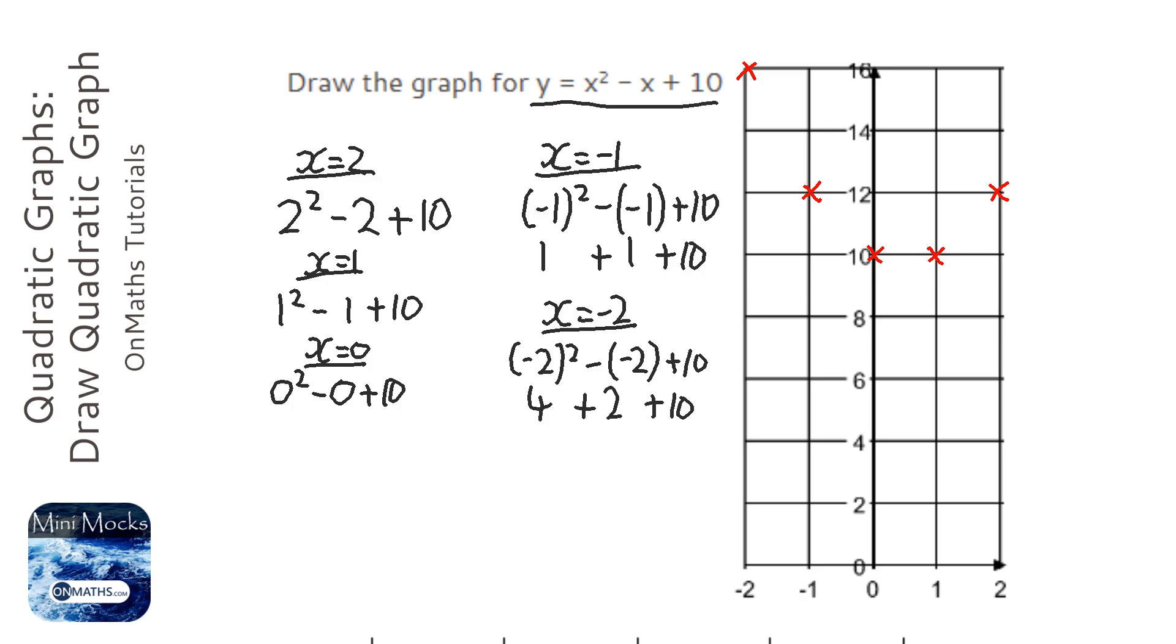Okay, so next we need to join these up. Now, there's a few rules for joining up a quadratic. It needs to be a U rather than a V. If you've got two points at the bottom, which we do, you need to make a point to go beneath them at the bottom of the curve, and it's got to be one line rather than feathering or a couple of lines.